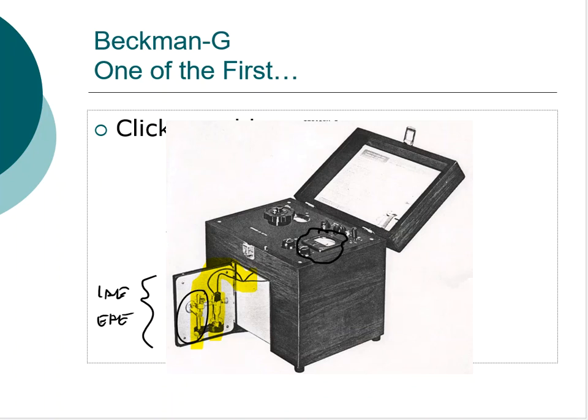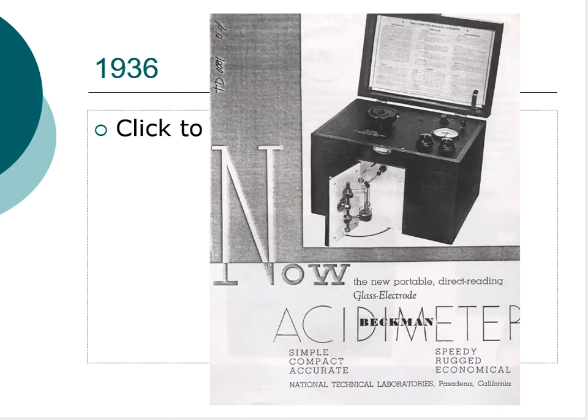The other probe — the unselective one — would go into the sample, and you'd watch the analog needle bounce back and forth to estimate the pH. There were many problems: the external reference and unselective probes were hard to control precisely, the reference standard solutions varied, and reading the analog meter accurately was difficult. Still, based on the technology of the day, the Beckman G was a great step in the right direction.